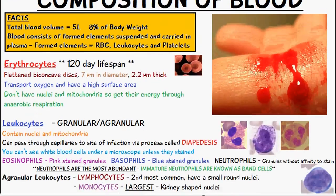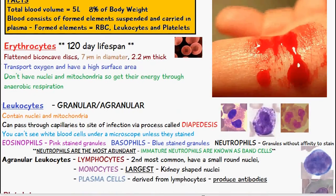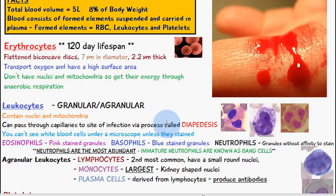Next, leukocytes — leukocytes can be granular or agranular. Leukocytes contain nuclei and mitochondria and they can pass through capillaries to the site of infection via a process called diapedesis. The granules in granular leukocytes cannot be seen under a microscope unless they are stained.